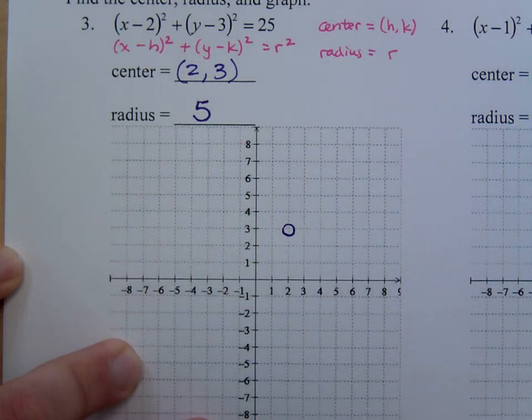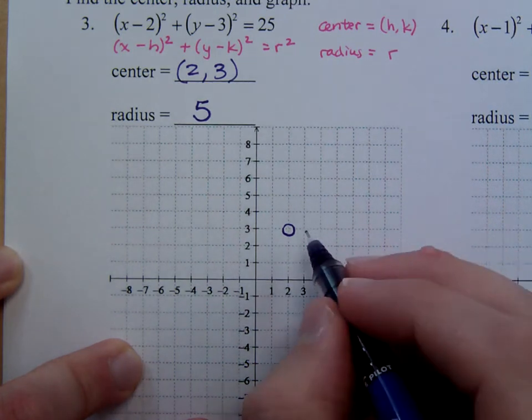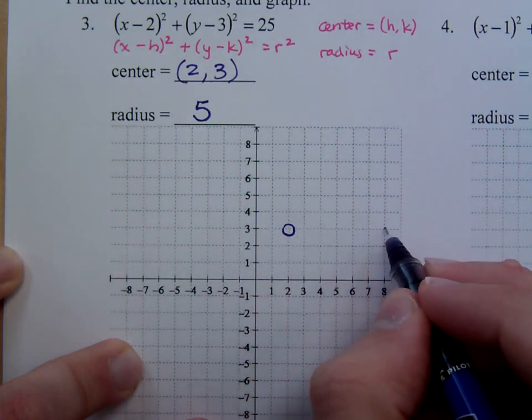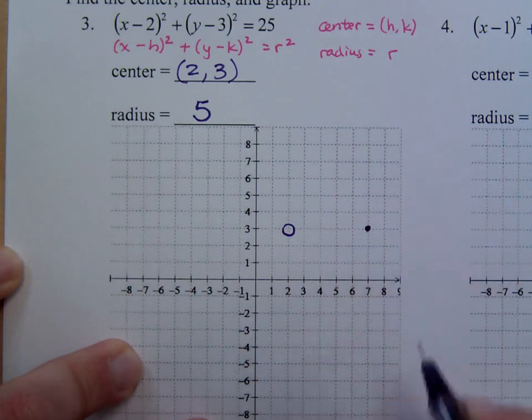And with a radius of 5, the easy way to do this is to just go 5 units out in every direction. So go 5 units out to the right, so that's going to be out there.